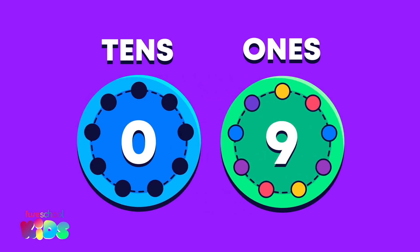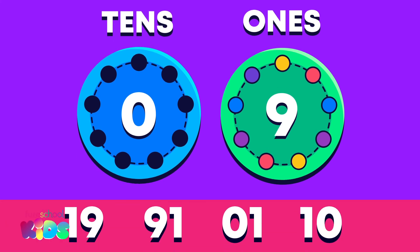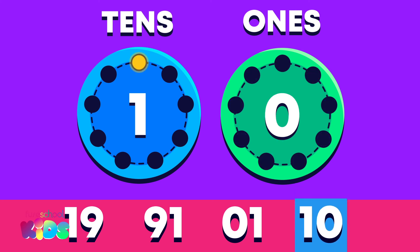If there was one more asteroid, which answer shows how many there would be? This one — because ten is the number that comes after nine.